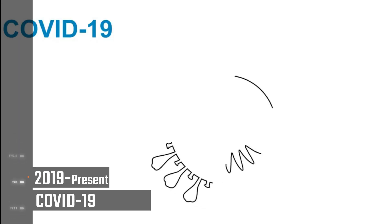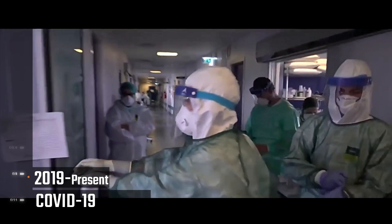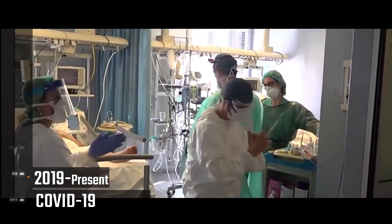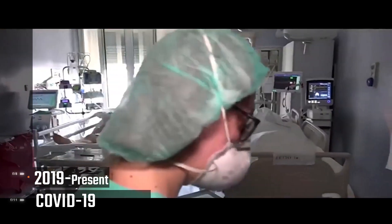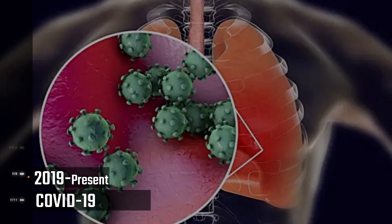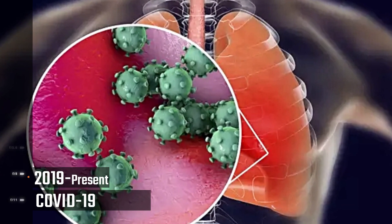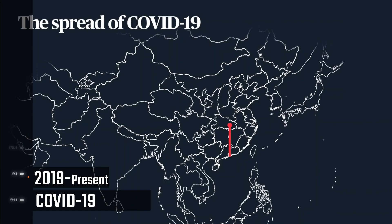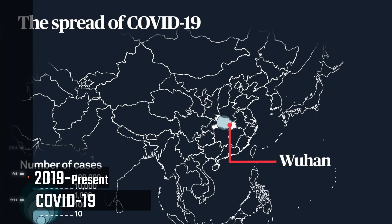COVID-19, 2019 to present. The 2019–2020 coronavirus pandemic is an ongoing pandemic of coronavirus disease (COVID-19), caused by Severe Acute Respiratory Syndrome Coronavirus 2 (SARS-CoV-2). It was first identified in Wuhan, Hubei, China in December 2019. The outbreak was recognized as a pandemic by the World Health Organization on March 11th, 2020.